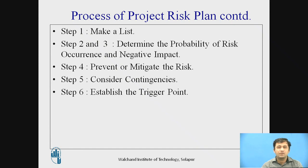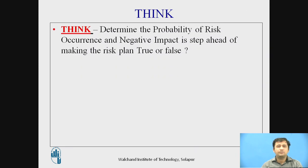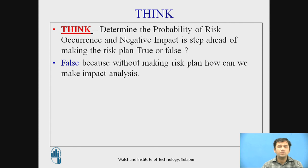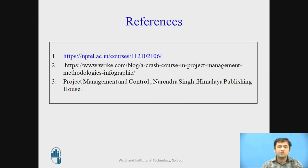These are the six steps basically followed for project risk planning; we will deal with them in depth in coming lectures. Quick question: determining the probability of risk occurrence and negative impact is a step ahead of making the risk plan — true or false? The answer is false, because without making a risk plan, how can we make an impact analysis? References used are from NPTO web material and the book 'Project Management and Control' by Narendra Singhima from Himalaya Publication. Thank you.